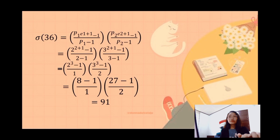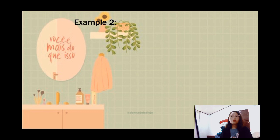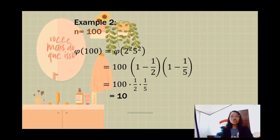For the second example, let N = 100. The phi function of 100: phi(100) = phi(2² × 5²) = 100 × (1 − 1/2) × (1 − 1/5) = 100 × 1/2 × 4/5 = 40. Wait — phi(100) = 40. The speaker states phi(100) = 10.